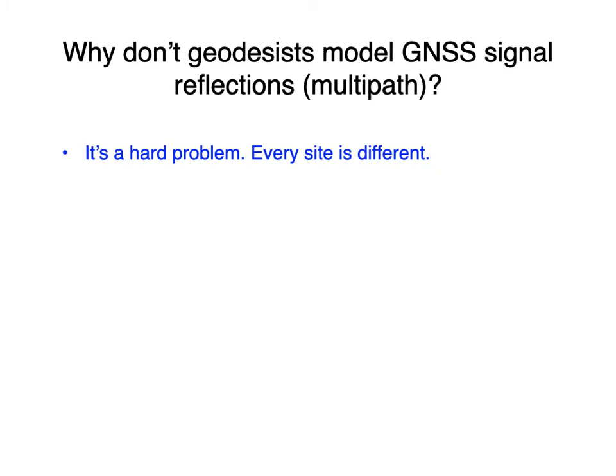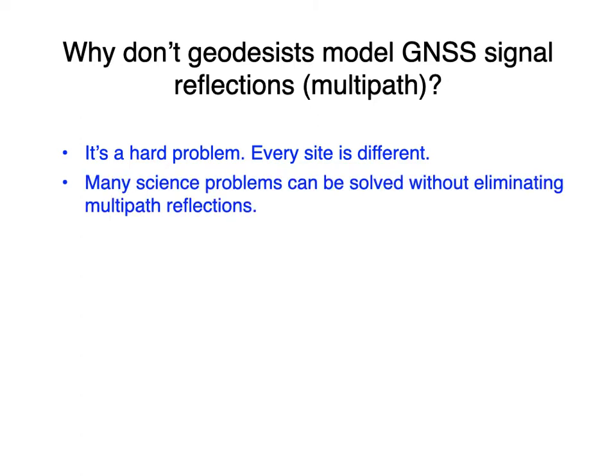The problem is it's difficult. Every site is different. We make a lot of assumptions on the behavior of other error sources that turn out to be pretty effective, but multipath truly is site-specific. Second, many geoscience problems can be solved without eliminating multipath reflections — if you can resolve the problem by averaging longer, there's less emphasis on trying to solve it.